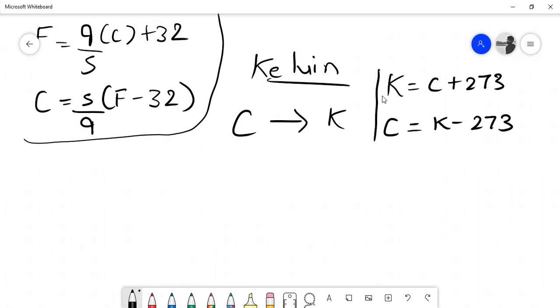All right, now what if I ask you, how do you convert Fahrenheit into Kelvin? Fahrenheit to Kelvin? This is the best way to do this: you convert Fahrenheit into Celsius and then Celsius to Kelvin. You can use this formula for that.